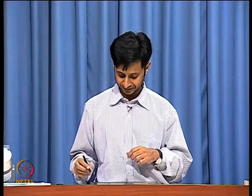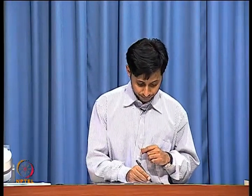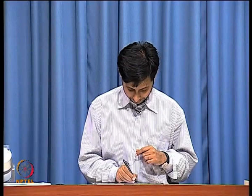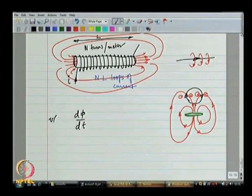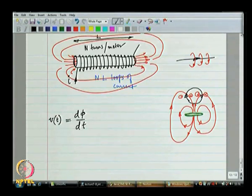Whenever there is a change in magnetic flux, a voltage is developed which opposes the change. In the case of an inductor, there will be a potential drop across the inductor proportional to d phi/dt, where phi is the magnetic flux through the solenoid. The flux would change if the current changes.